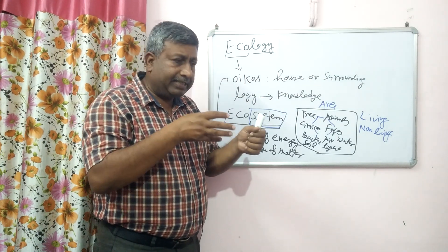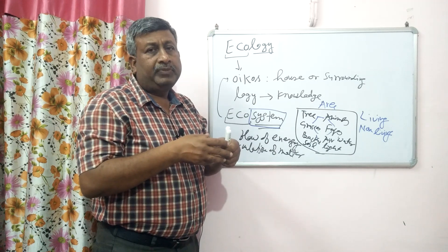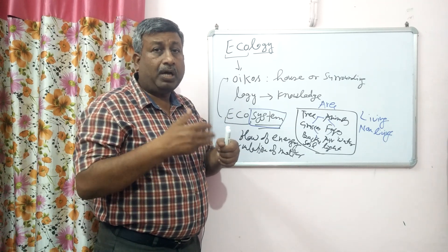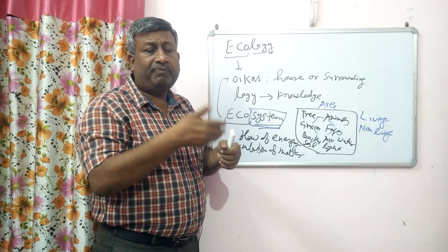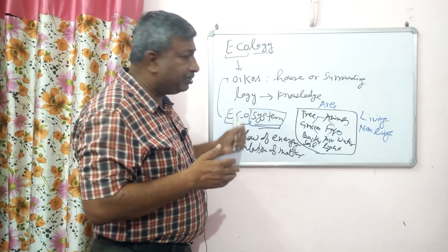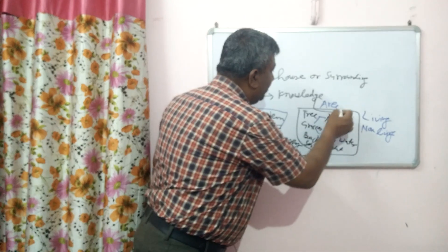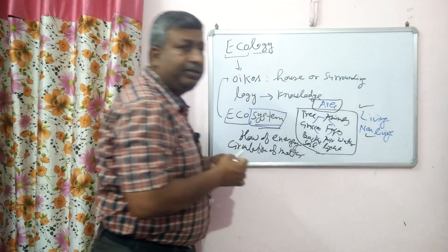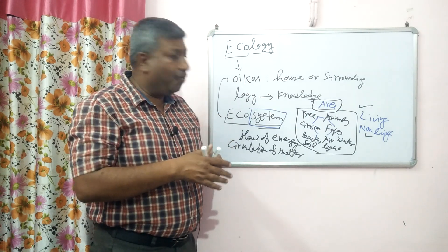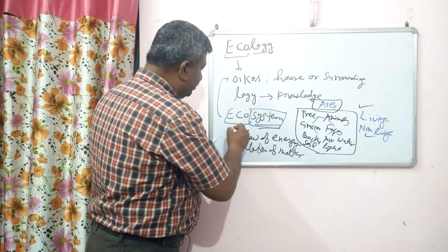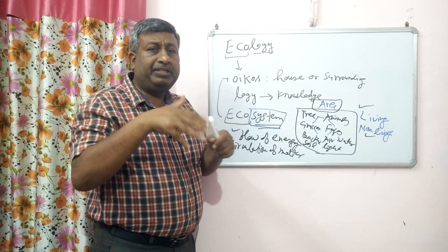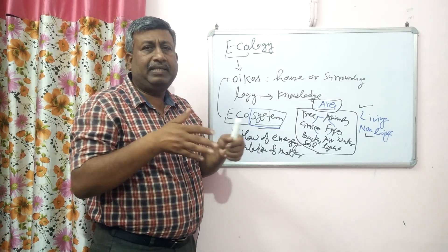And due to this interlinkage or interrelated process, how the energy is transferred from one species to another species, from one organism to another organism — means the flow of energy is there. So ecosystem is an area where living and non-living are interrelated, interlinked, have interaction, for the flow of energy and circulation of matter. If there is no flow of energy, then it is not a system.